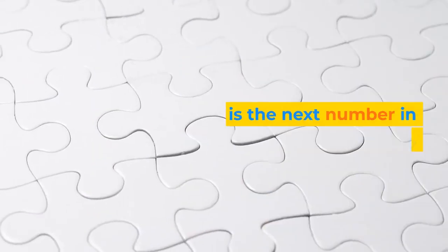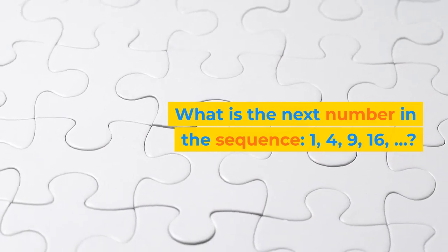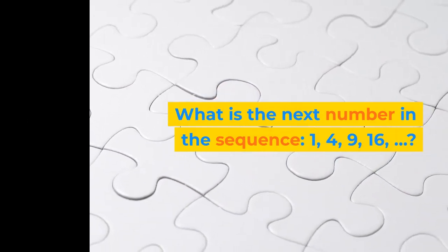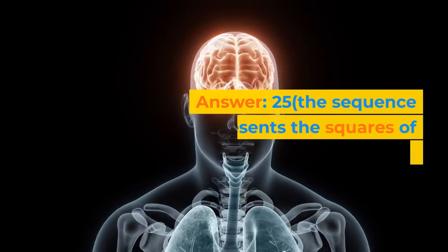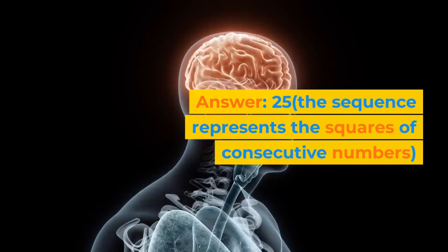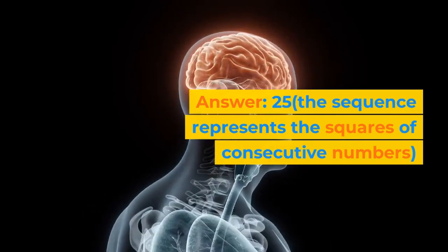What is the next number in the sequence? 1, 4, 9, 16. Answer: 25. The sequence represents the squares of consecutive numbers.